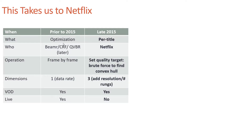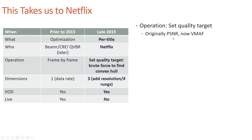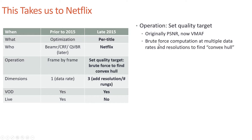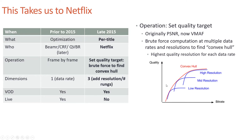Netflix's per-title encoding jumps from one dimension (data rate only) to three dimensions: data rate, resolution, and rungs. You set a quality target — originally PSNR, now VMAF — then use multiple brute-force computations at different data rates and resolutions to find the convex hull, defined by the highest quality resolution for each data rate. For example, at one megabit per second, 540p might be the highest quality resolution.